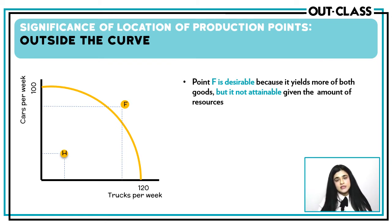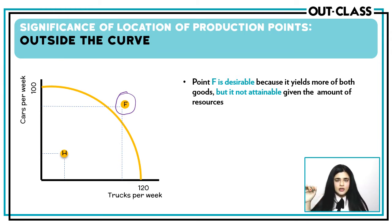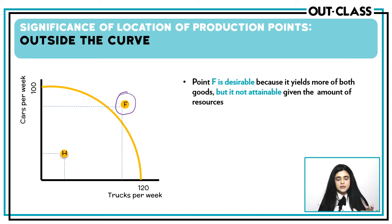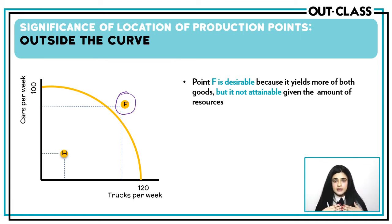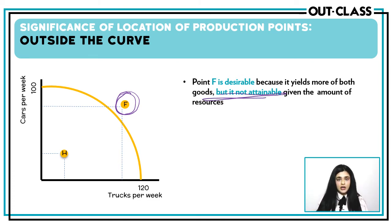Points outside the curve — such as point F — mean you are trying to produce at a level which is not possible within your given budget. For example, if the maximum cars you can make is 100 and maximum trucks is 120, you cannot make 150 cars or 200 trucks because your production possibility curve was drawn with your particular budget in mind. Any point outside the curve is therefore an unattainable point.